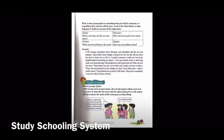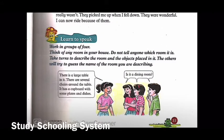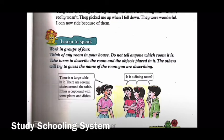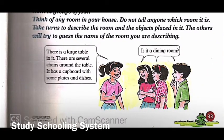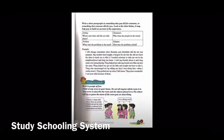Once you're done with those exercises, let's move to learn to speak. Work in groups of four — you can do this with your parents, family members, siblings, or friends. Think of any room in your house but do not tell anyone which room it is. Take turns to describe the room and the objects in it, and the others will try to guess the name of the room. Use adjectives to describe the colors and objects. For example: there is a large table, there are several chairs around the table, there is a cupboard with plates and dishes — is it a dining room?